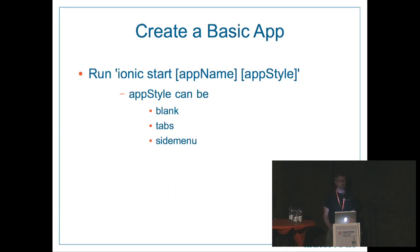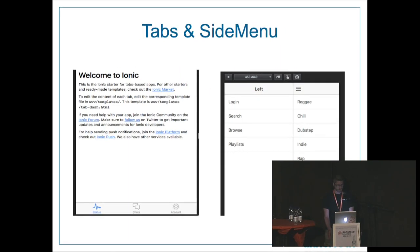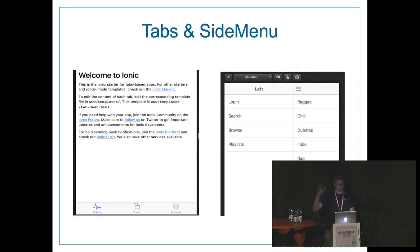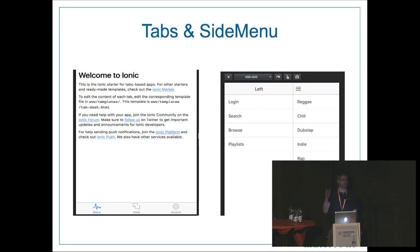To create a basic app, you install Ionic and run 'ionic start' followed by the app name and the style of app. You have three styles: blank, tabs, and side menu. The tabs option gives you a tabs UI at the bottom — a chat widget and things like that out of the box. With 'ionic start myproject sidemenu' you get a side menu — the default comes with reggae, chill, dubstep as menu items — with a burger menu icon that flies your side menu in and out.